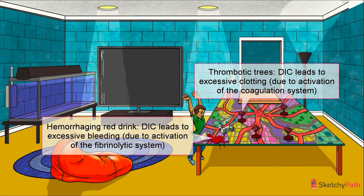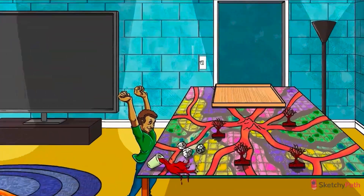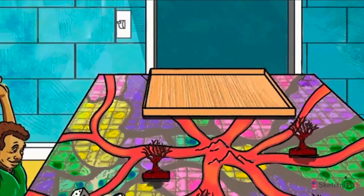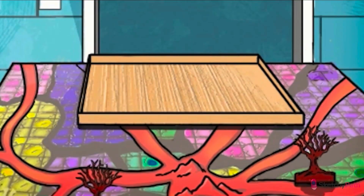See the board? Not only are there thrombotic trees gunking up those vascular rivers, we've included a hemorrhagic drink spilling across the table. It's weird, I know — you're new to this game.